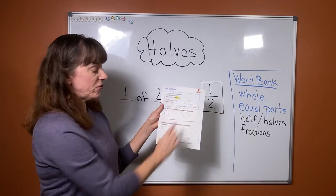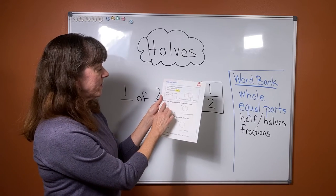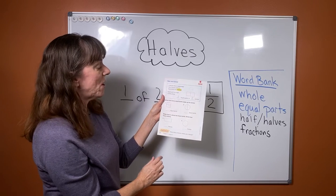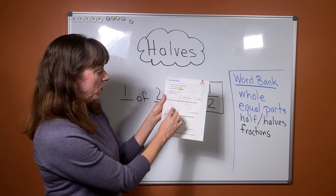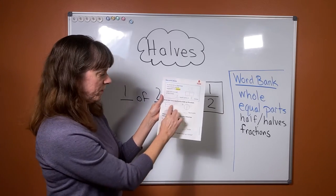There's some more information here about halves for you and your grown-up to look at. Right here for numbers one and two it says write how many equal parts make up the whole. So you're going to look at this figure and decide how many equal parts are there for one and two.